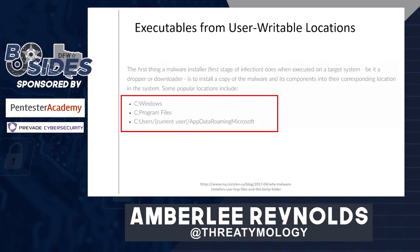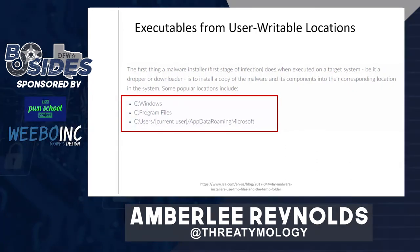Another successful use case: looking for executables running from user-writable locations. For a user with standard permissions, they can generally write to C:\ProgramData, any user folders like C:\Users\[username]\Documents, Downloads, and Pictures, as well as the AppData folder including both local and roaming. Malware likes to install itself in these locations because all users have access to them, making them a good place to hunt for malware.